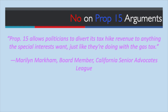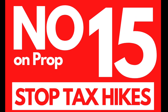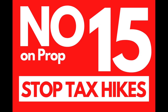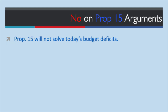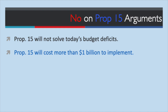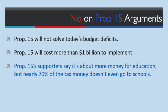Prop 15 allows politicians to divert its tax hike revenue to anything special interests want. Independents, Democrats, and Republicans agree: no on Prop 15. The nonpartisan legislative analyst says most funding won't arrive until 2025. The California Assessors Association says Prop 15 will cost more than $1 billion to implement, meaning deeper cuts to already stretched local government budgets. Prop 15 supporters say it's about more money for education, but nearly 70% of the tax money doesn't even go to schools.